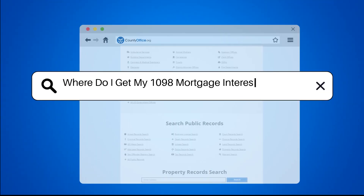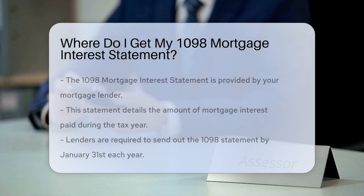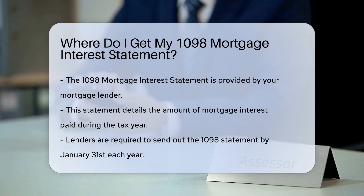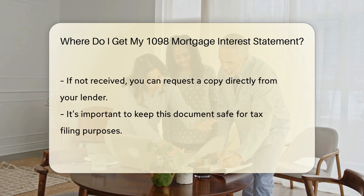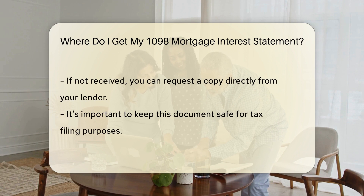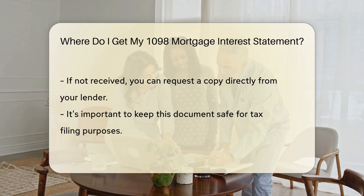Where do I get my 1098 Mortgage Interest Statement? If you're wondering where to find your 1098 Mortgage Interest Statement, it's typically provided by your mortgage lender. This statement details the amount of mortgage interest you paid during the tax year. Your lender is required to send you this statement by January 31st each year for tax reporting purposes.